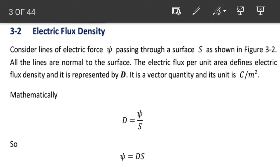Now we talk about electric flux density. Electric flux density is a vector quantity, represented by D. The unit of the electric flux density is coulomb per square meter.